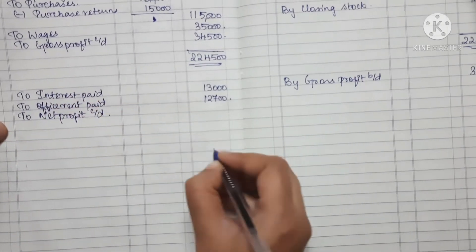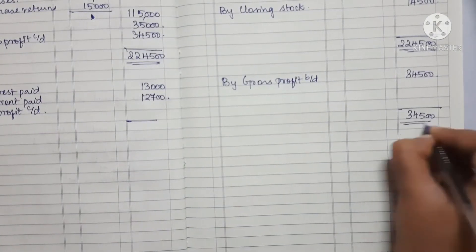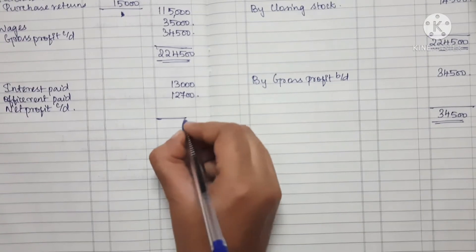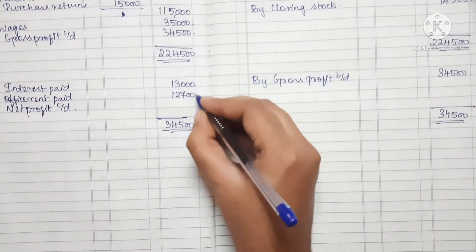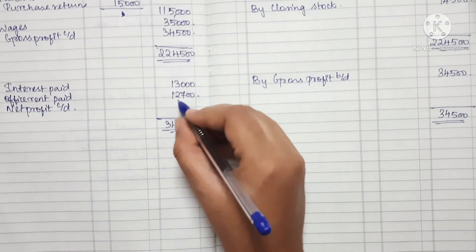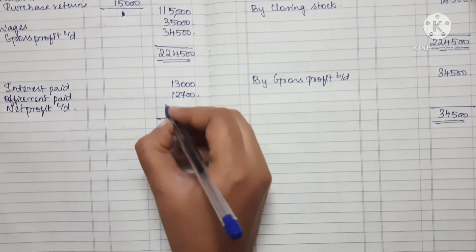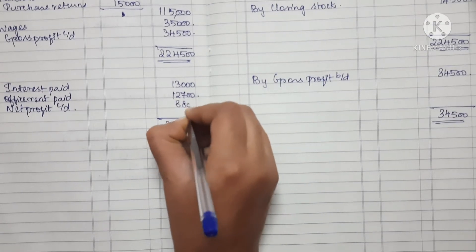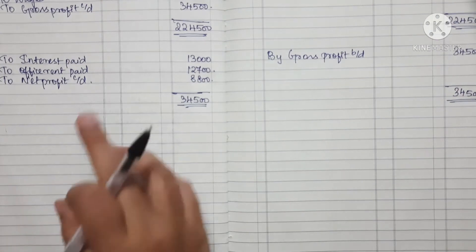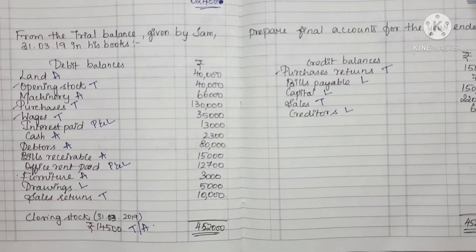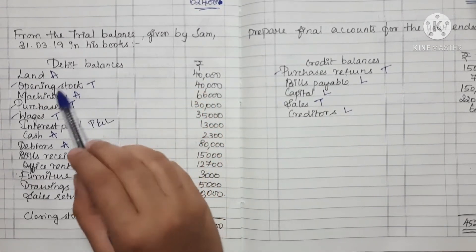Total expenses are 25,700. The gross profit transferred is 34,500. So 34,500 minus 25,700 equals 8,800, which is the net profit.